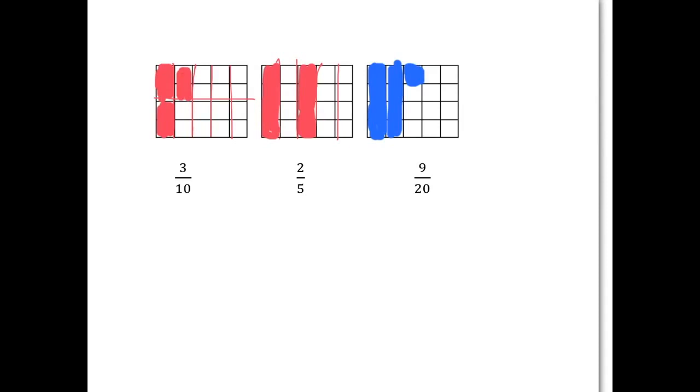For two-fifths, you need to cut the rectangle up into five pieces, and then you take two of those pieces.